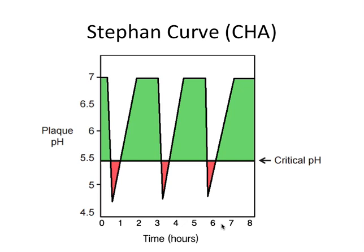We have a couple of acid challenges here. Breakfast is the first one — the pH drops and then is gradually buffered back to normal. Then say we have lunch and a mid-afternoon snack. So in this eight-hour workday, we have three acid challenges: five to 20 minutes to hit a minimum, and 30 to 60 minutes for the saliva to buffer the plaque back to a more neutral pH. This is a pretty healthy Stephan curve — there's not that much in the red, so to speak.